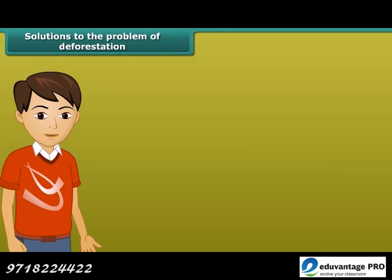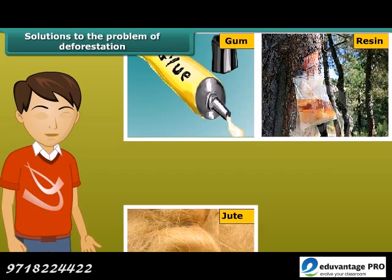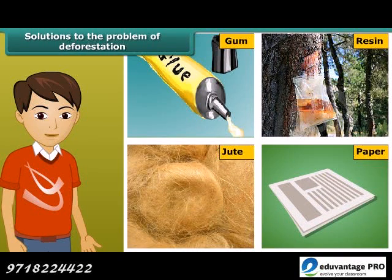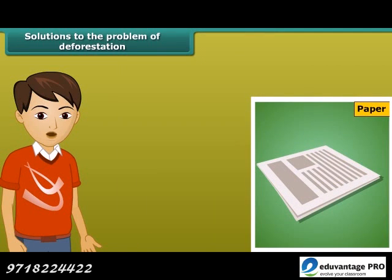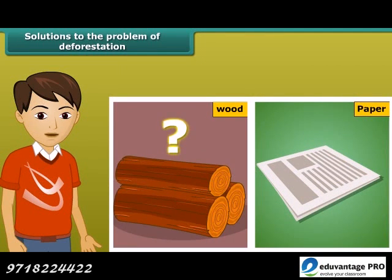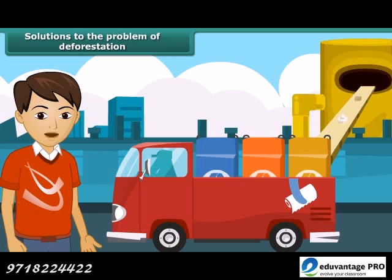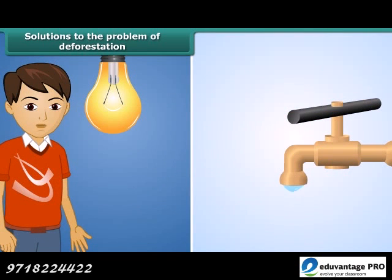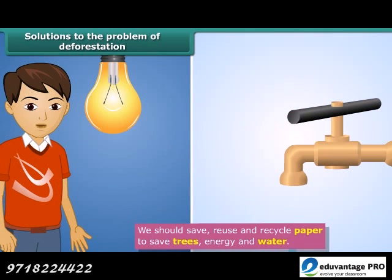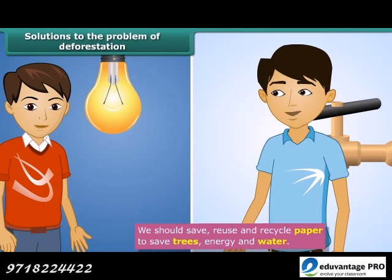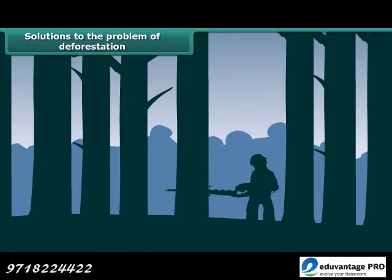We get many things from forests — gum, raisin, jute, and paper are important products. Can you think of any alternatives available for paper? What would happen if we had no wood? Recycling of paper is the simple answer. Paper can be recycled five to seven times for use. By recycling paper, not only the trees but also energy and water could be saved. Thus we should save, reuse, and recycle paper.